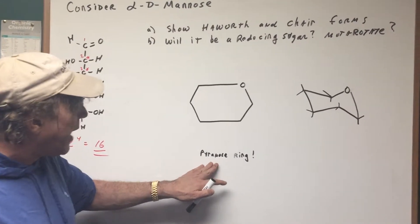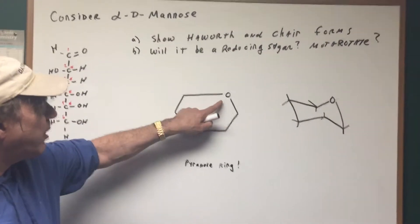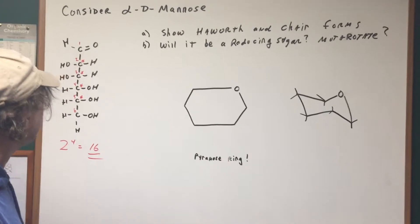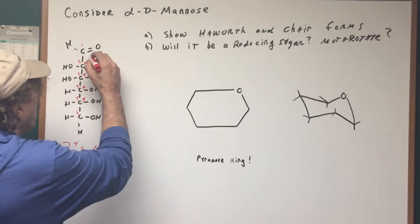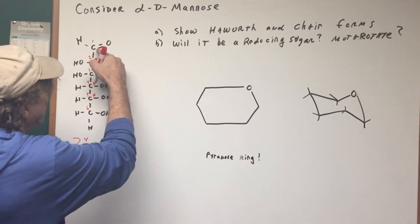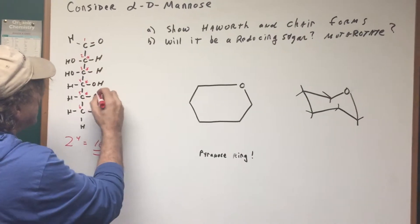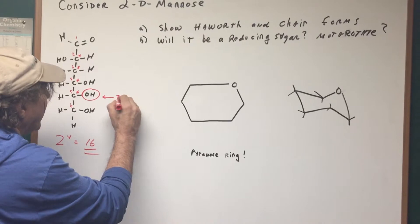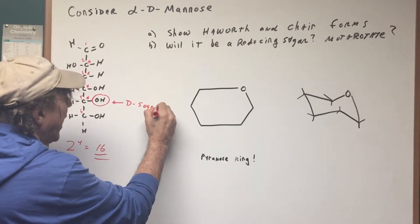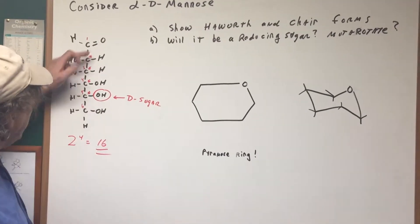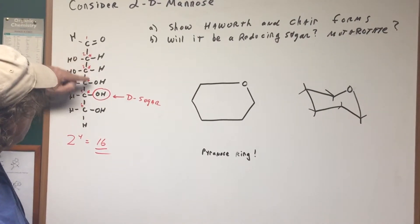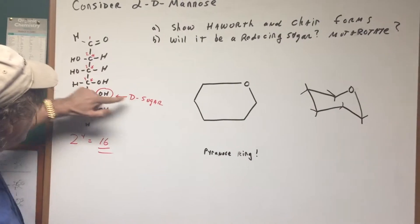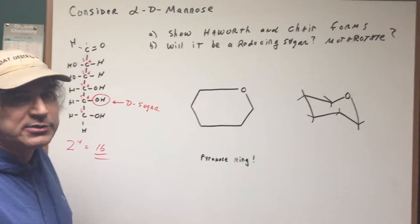The first thing I would do is I would draw a pyranose. A pyranose is a six-membered ring. Now I'm going to show you a nice trick. First of all, the carbon that's furthest away from the carbonyl that's chiral. If the OH is on the right side, that means that this is going to be a D sugar. A D sugar is when the chiral carbon furthest from the carbonyl group is on the right side. That's how you can tell it's a D sugar.